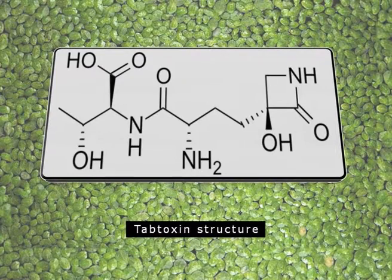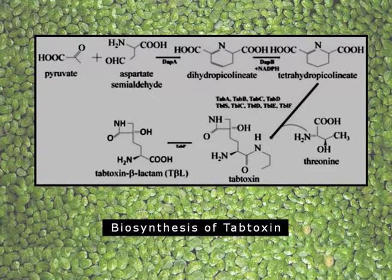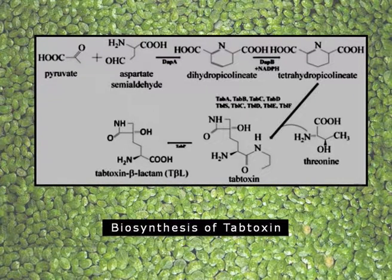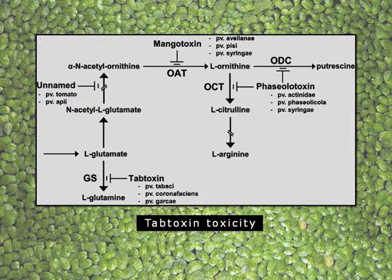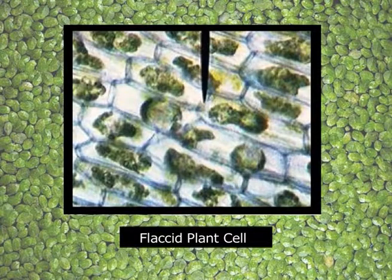This bacteria will enter and produce tabtoxin, which has multiple amides and amino groups. Tabtoxin is produced from the simple pyruvate — pyruvic acid — which is converted to different intermediates, ultimately producing tetrahydrodipicolinate, which combines with threonine, an essential amino acid, to produce tabtoxin. This tabtoxin can inhibit the biosynthesis of glutamine from glutamate, so we call it an inhibitor of protein synthesis. When protein synthesis is inhibited, different membranes are affected — like the thylakoid membrane and the cell membrane — and thereby the plant cell becomes flaccid and can die.